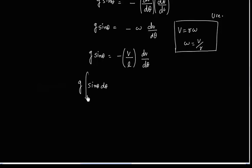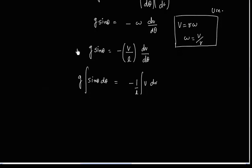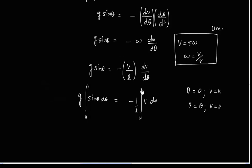So let us separate the variables, theta on one side and v on one side. We can integrate. When theta is 0, V is u. And when theta is theta, let us say v is v. So v from u to v, and theta from 0 to theta.